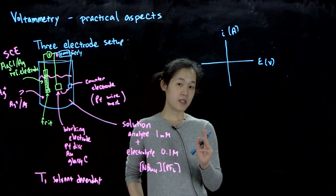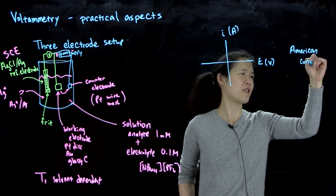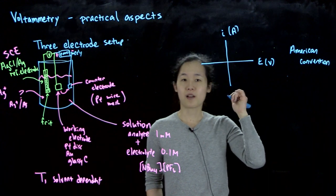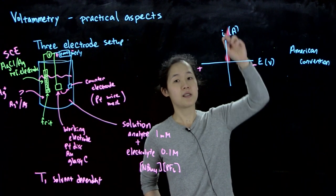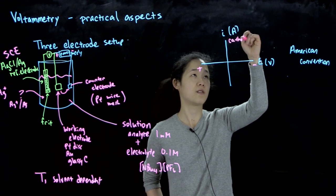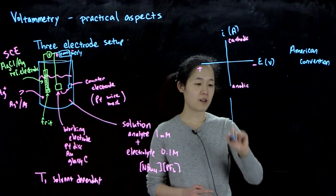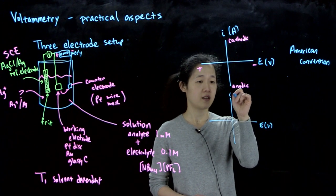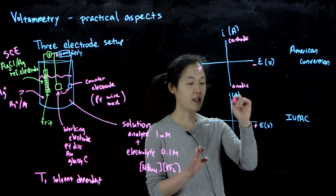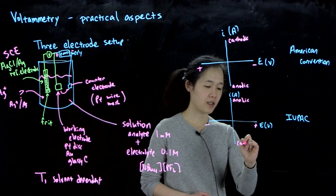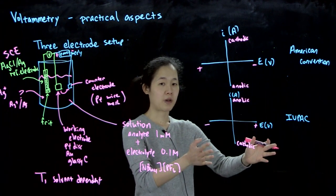I'll point out there are two conventions. The so-called American Convention, which I've also heard called the Texas Convention, is nicely backwards. You put negative potentials to the right side, positive potentials to the left. On the y-axis, a positive current is cathodic, so reductive, and a negative current is anodic. If you live anywhere else, there's the IUPAC Convention, which I prefer. In this case, you have positive to the right, negative to the left. Positive current will be anodic, and this would be cathodic.